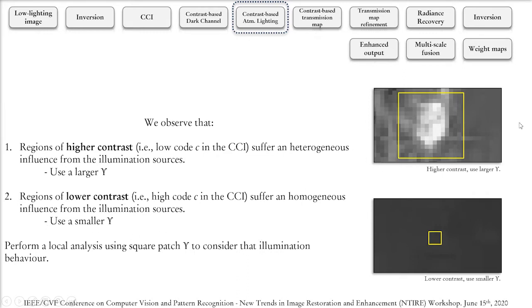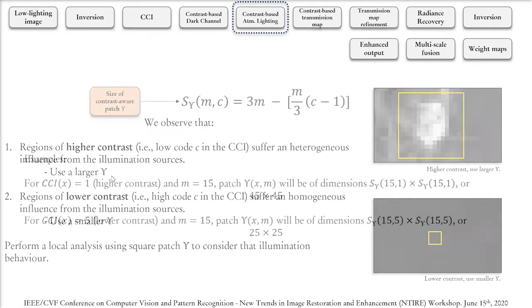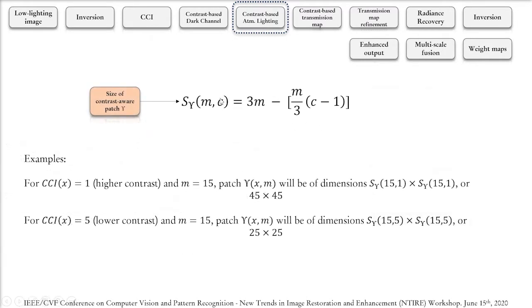For regions of higher contrast, however, we would have to look at a higher number of pixels to find one that would properly represent the local illumination characteristics, so we would have to use a larger patch Upsilon. We then offer an equation that given a contrast code C and a certain multiplying factor M will determine the size of patch Upsilon. For example, for a region X where we have a contrast code C equals to 1 representing a higher contrast region and we choose a multiplying factor of 15, the size of patch Upsilon would be 45 by 45. If for the same region we would actually have lower contrast, so a contrast code C equals to 5, the patch Upsilon would be 25 by 25 pixels.